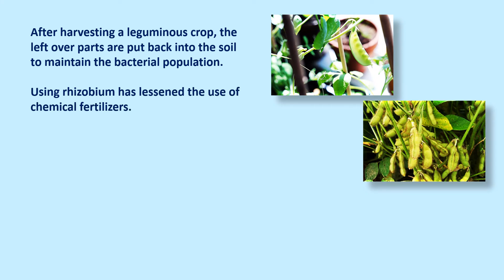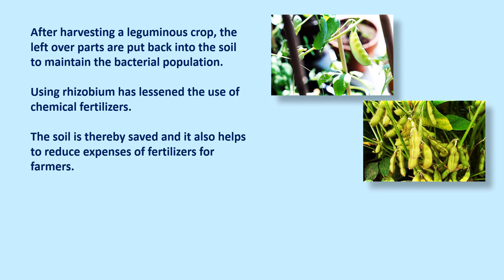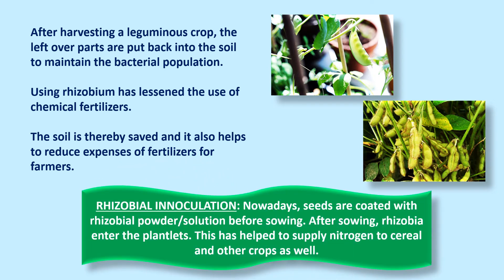Using rhizobium has lessened the use of chemical fertilizers, which harm soil and make it infertile over time. Rhizobium keeps soil fertile by turning nitrogen from the air into nitrogenous compounds, saving soil and reducing fertilizer expenses for farmers. Nowadays seeds are coated with rhizobium powder or solution before sowing; rhizobia enter from the seed into plantlets and supply nitrogen not only to leguminous crops but also to cereals and other crops. This method is called rhizobium inoculation.